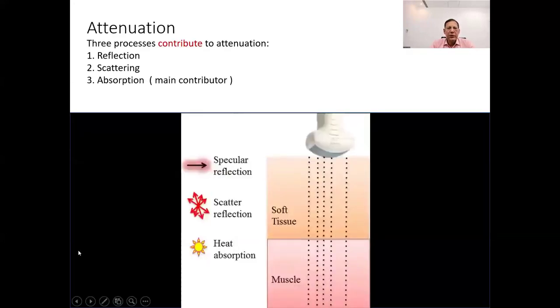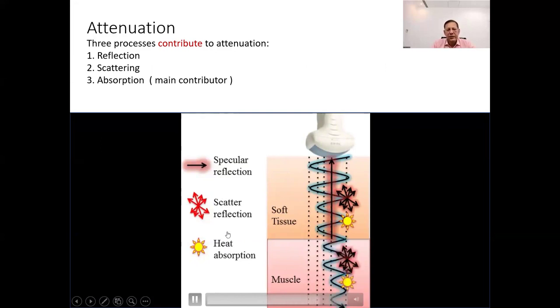When ultrasound waves travel through the body, three processes of sound-tissue interactions contribute to attenuation. Number one, they bounce off tissue boundaries called reflection. Number two, they scatter in different directions called scattering. And number three, they get absorbed by the tissues called absorption. These processes weaken the signal, affecting the clarity of ultrasound images.